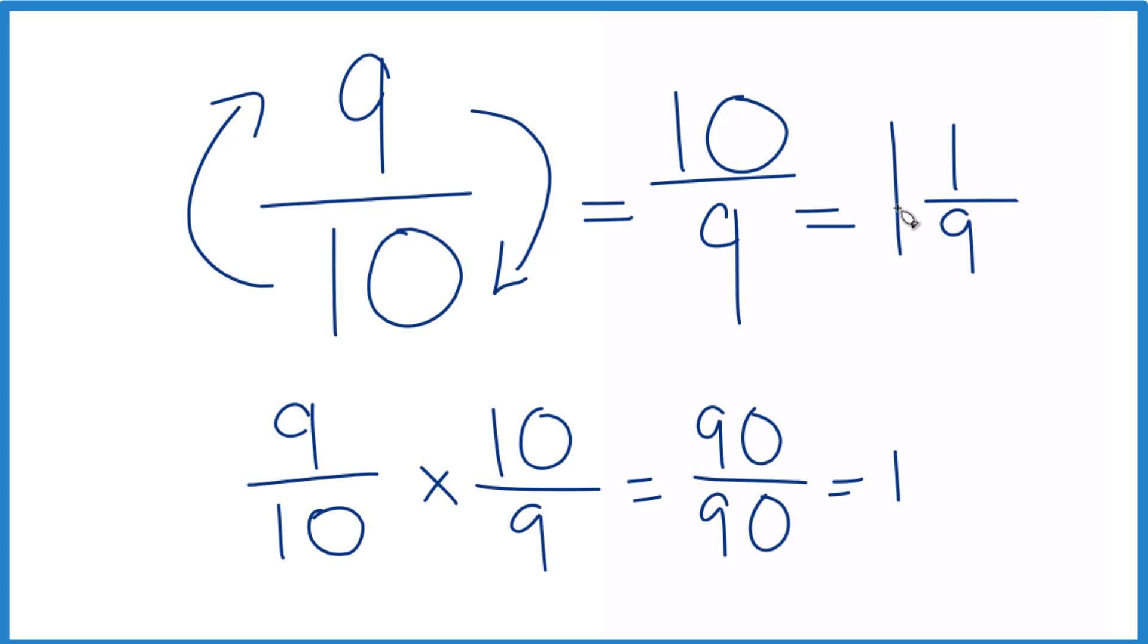And you can check that. 1 times 9 is 9, 9 plus 1, that gives us 10. We keep the denominator the same. That's it. This is Dr. B. Thanks for watchin'.